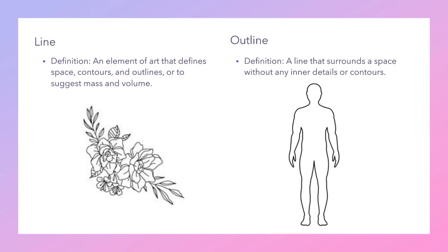Line is an element of art that defines space, contours, and outlines, or suggests mass and volume. You can see that a picture with line has a lot of little details, like wrinkles — all that detail stuff is line. Outline, however, is a line that surrounds a space without any inner details or contours; it is just the line along the outside, hence outline.